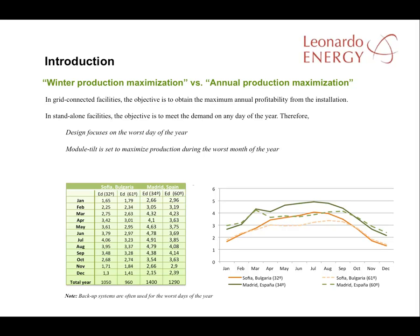Grid-connected facilities are designed to maximize production over the whole year with minimum investment. Off-grid facilities, on the other hand, are designed to produce sufficient energy to match consumption on the worst day of the year.